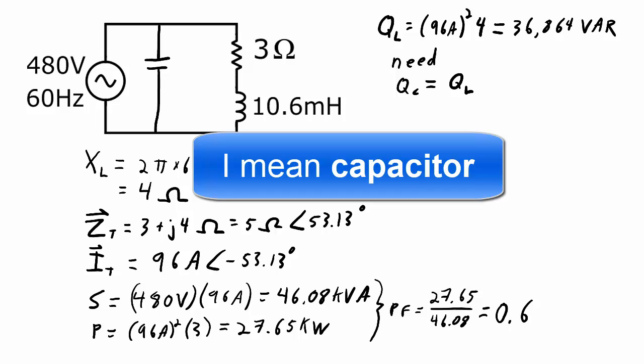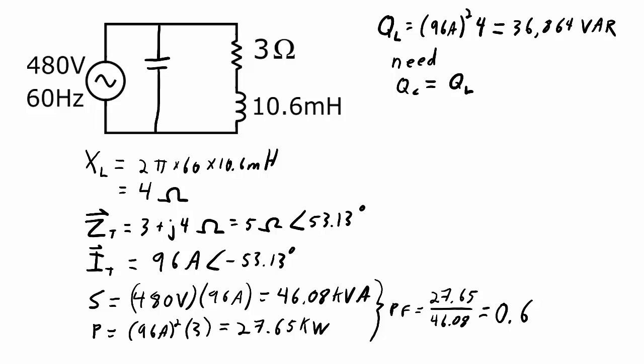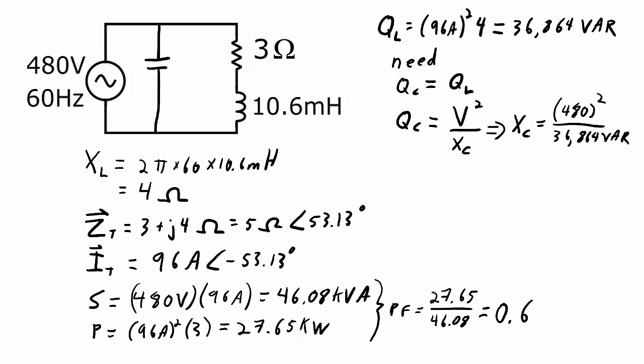I'm putting this capacitor in parallel with the source. In practical terms, it's easy to add a capacitor in parallel with the load without breaking the circuit — just switch it in or out. For calculations, it's also easy because you know the voltage across the capacitor. One equation for the reactive power of a capacitor is the voltage across it squared divided by the reactance XC. I know the voltage is 480 volts and the reactive power I need is 36,864 VAR, so XC is 480 squared divided by 36,864 VAR, which gives a capacitor reactance of 6.25 ohms.